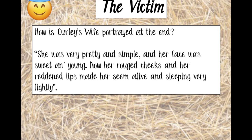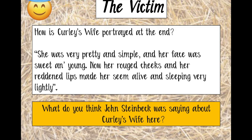Obviously Curly's wife is killed, so in that way she is of course a victim. But after she dies, how is she portrayed? John Steinbeck writes a description of her after death where all the flirtatious connotations disappear. She's simple. She's young. She's a young girl who's been killed. And whatever she's done in her life, it's not proportionate to the fact that she's been killed by Lennie. Have a think about what you think Steinbeck was perhaps saying about Curly's wife here.